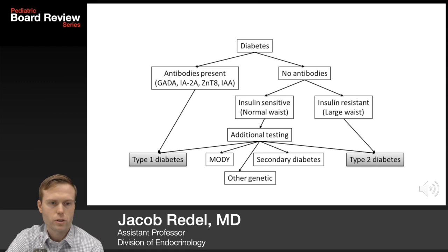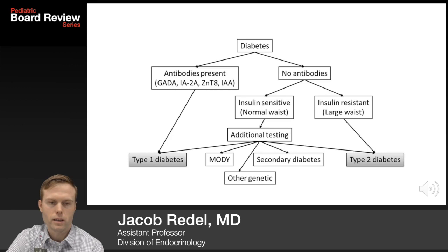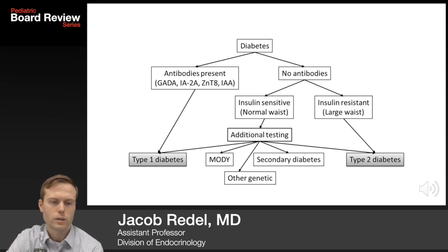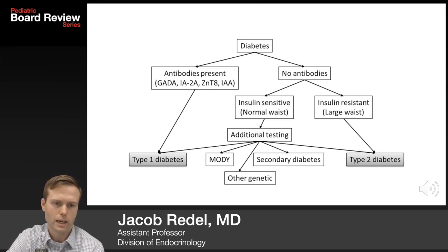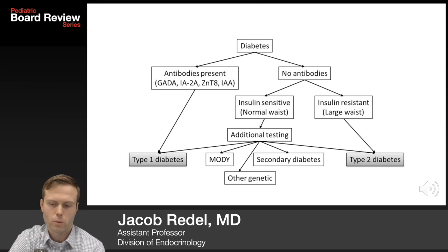When diagnosing type 1 versus type 2, an islet cell antibody screen is very helpful. If antibodies are present, the patient has type 1 diabetes. If there are no antibodies and there is a picture of insulin resistance — such as large waist circumference or acanthosis — that is clearly type 2 diabetes. Even patients with negative antibodies may have type 1 (classified as type 1b), but for boards: antibodies present indicates type 1, negative antibodies with insulin resistance indicates type 2.